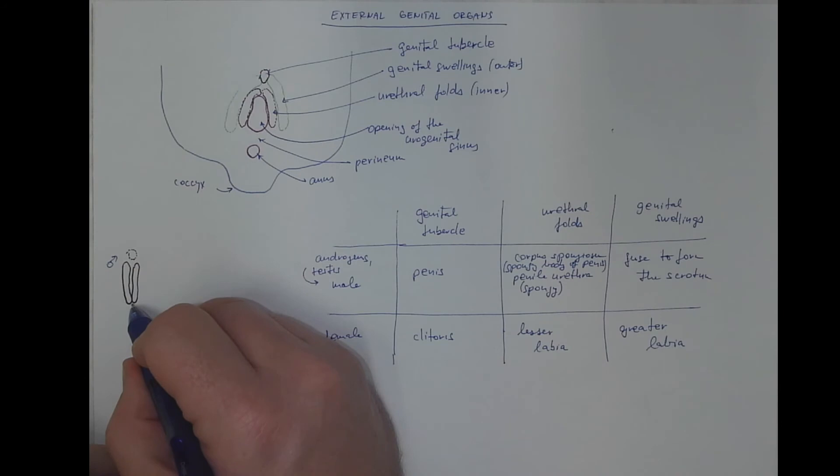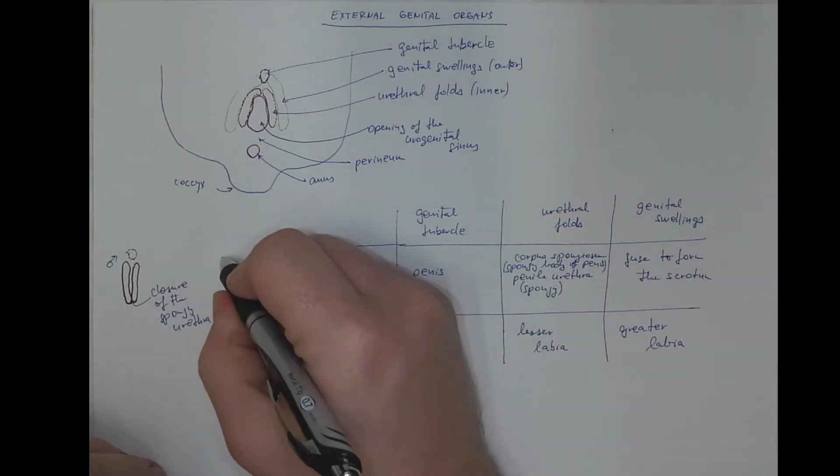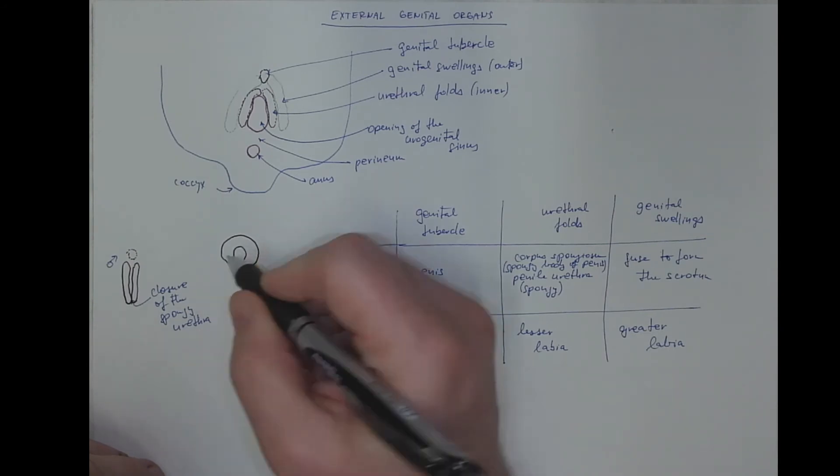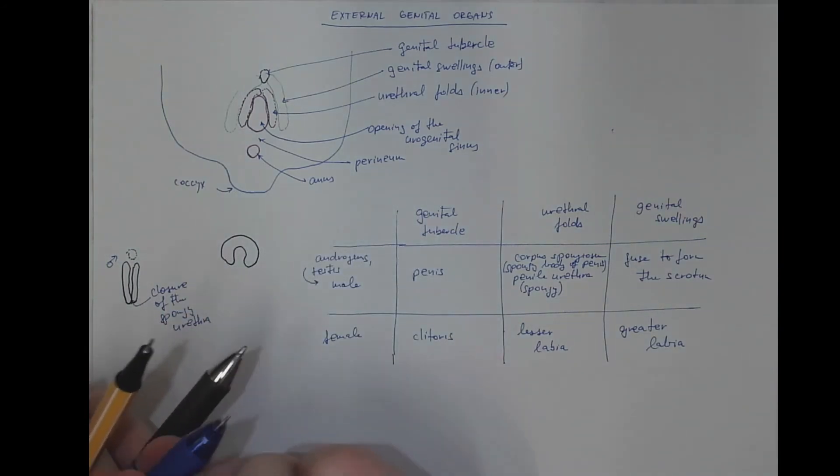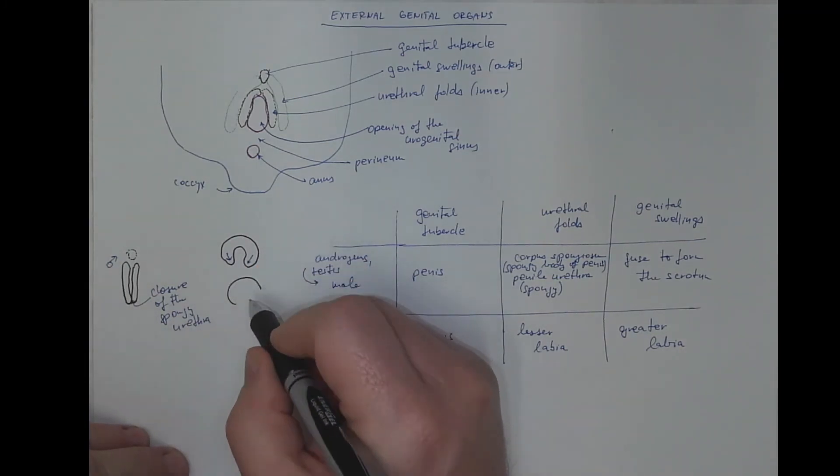This is the closure of the spongy urethra. In cross section, it looks like this. There is even a line of fusion.